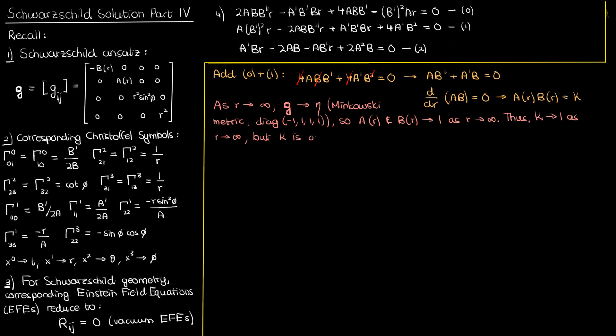But capital K is a constant in R, so its value should be the same for all values of R, very large, very small, etc. So if we know that K equals 1 as R approaches infinity, we can conclude then that capital K must be 1 to begin with. So A(R) times B(R) is 1. I'll call this equation 3.